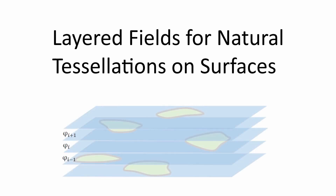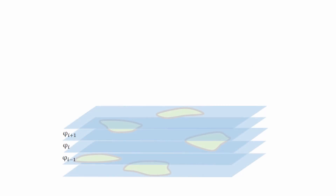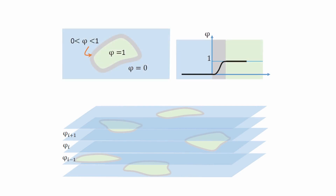We present layered fields for natural tessellations. Most natural tessellations occur as growth phenomena where each cell grows independently, without knowledge of the location of its neighbors nor their distribution. We model such phenomena as layered functions which define individual cells. A narrow band where the function decays smoothly separates the inside and outside of a cell. Cells grow freely at similar rates until constrained by other growing cells.